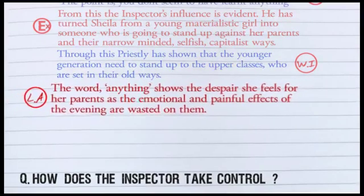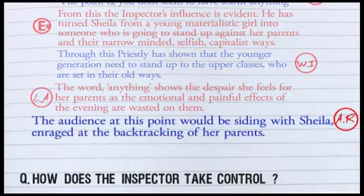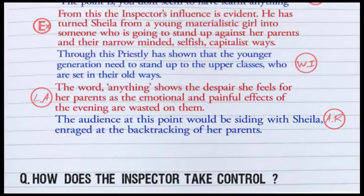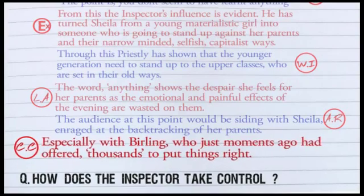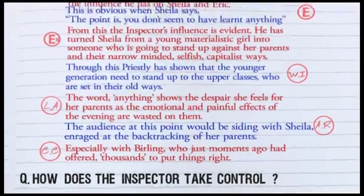I can break off again and now look at the audience reaction, developing it even further. The audience at this point would be siding with Sheila, enraged at the backtracking of her parents. And here I want to make a cyclical connection — especially with Birling, who just moments ago had offered thousands in an attempt to put things right. And as you can see, putting this whole essay together in this style just breaks it down. It's not illogical.